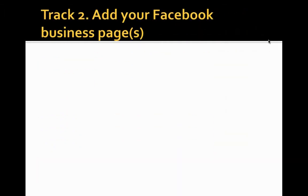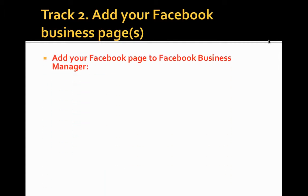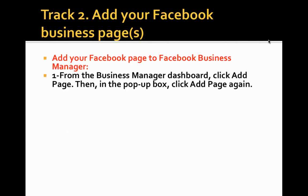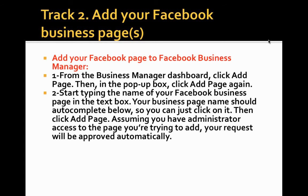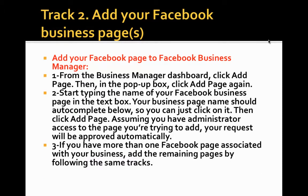Track two: Add your Facebook Business pages. Step one: from the Business Manager dashboard, click Add page, then in the pop-up box click Add page again. Step two: start typing the name of your Facebook Business page in the text box — your business page name should auto-complete so you can just click on it, then click Add page. Assuming you have administrator access to the page you are trying to add, your request will be approved automatically. Step three: if you have more than one Facebook page associated with your business, add the remaining pages by following the same steps.